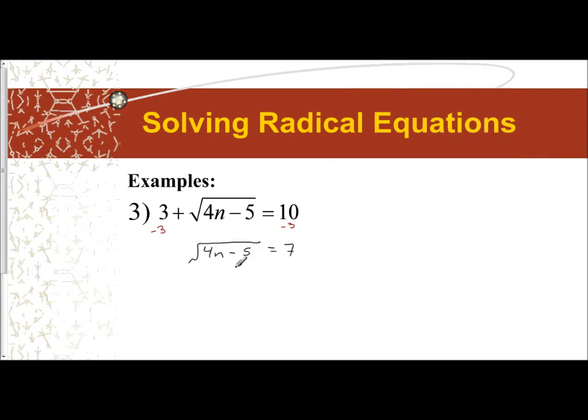Now that the square root is completely isolated, I can remove it by performing the inverse operation, which is squaring. If I square both sides to keep the equation balanced, I'll be left with whatever's in my radical, which is 4n minus 5 equals 7 squared is 49.